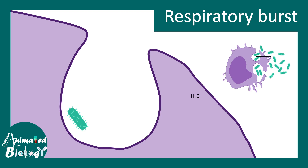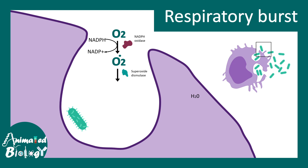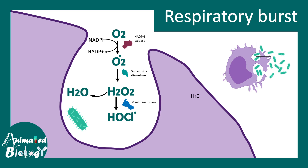Once they recognize the pathogen, macrophages kill it via respiratory burst — neutrophils also have this capability. They take oxygen and convert it into oxygen radicals with the help of NADPH oxidase. Superoxide dismutase then converts it into H2O2, or hydrogen peroxide, and myeloperoxidase converts it into HOCl free radicals. All these free radicals are useful to kill the pathogen.